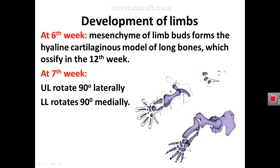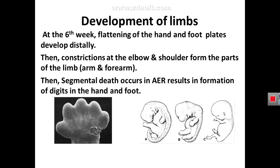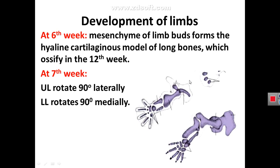Also at the sixth week, inside the limb bud there is a cartilaginous model of the bone — hyaline cartilage — that will ossify later at 12 weeks. At the seventh week, the upper limb rotates 90 degrees laterally and the lower limb rotates 90 degrees medially. Therefore, the radius, which was anterior, becomes lateral in the upper limb, while the tibia, which was anterior, becomes medial in the lower limb.